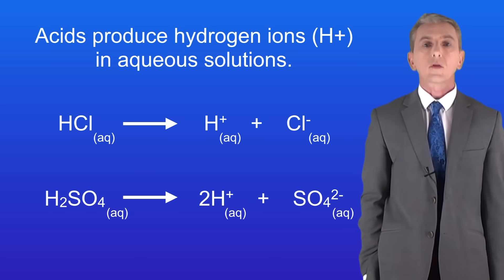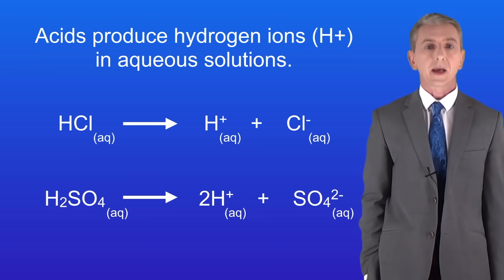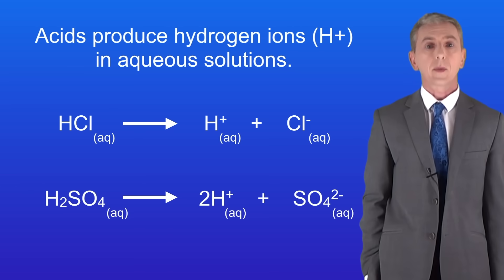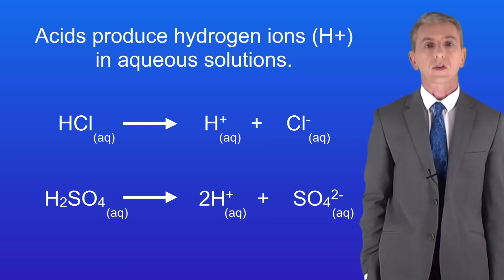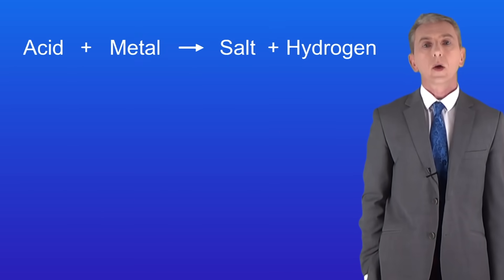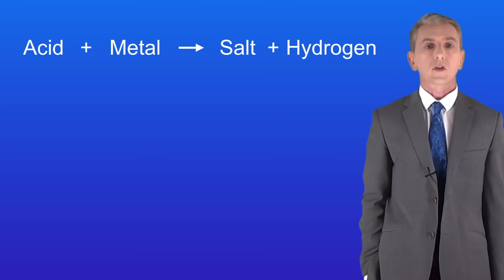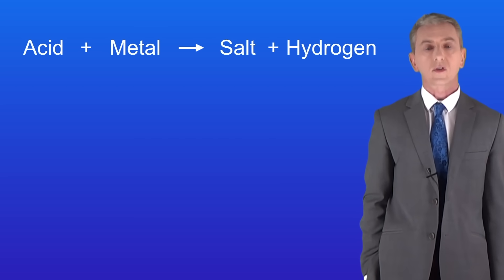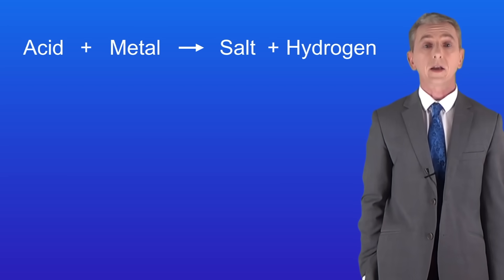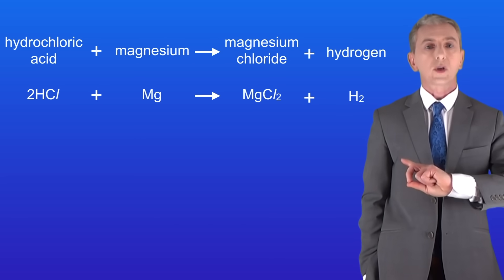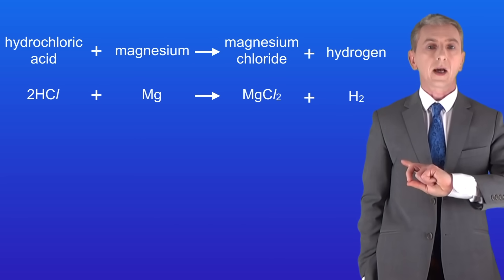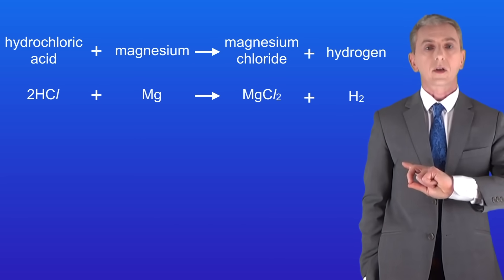We looked at the reactions between the metals magnesium, zinc, and iron with hydrochloric acid and sulfuric acid. We saw that when acids react with metals we always produce a salt and hydrogen gas. This shows a reaction between magnesium and hydrochloric acid.